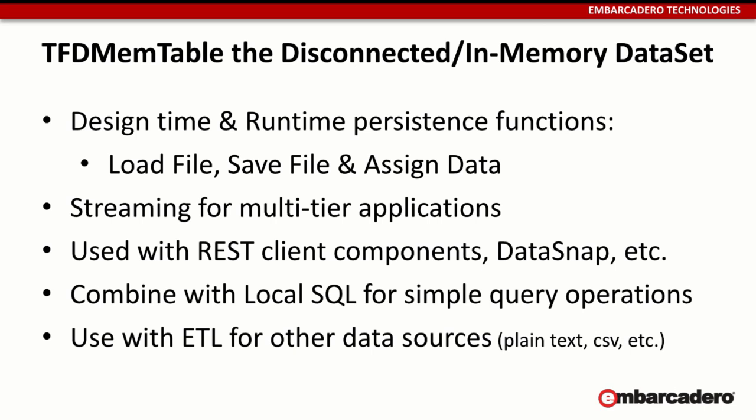It has streaming options, so you can stream it between multiple tiers in a multi-tier architecture. In that regard, it's used in DataSnap and also with our REST client components. When we're pulling data from a REST service and we want to store columnar data — data in columns and rows — in memory, we store it in a FDMemTable. Anytime you're dealing with data in a column-and-row configuration, like a spreadsheet where each column has a specific data type and certain attributes such as width or being required, that's a good use for the TFDMemTable.